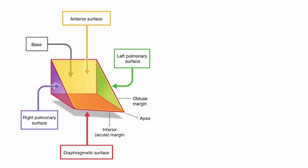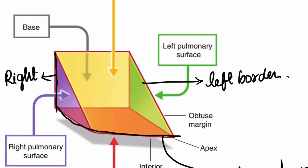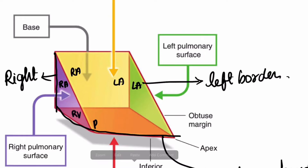In this diagram we have the right border here, the left border, and the inferior border. Let us mark the chambers: right atrium, left auricle, right ventricle, and left ventricle.